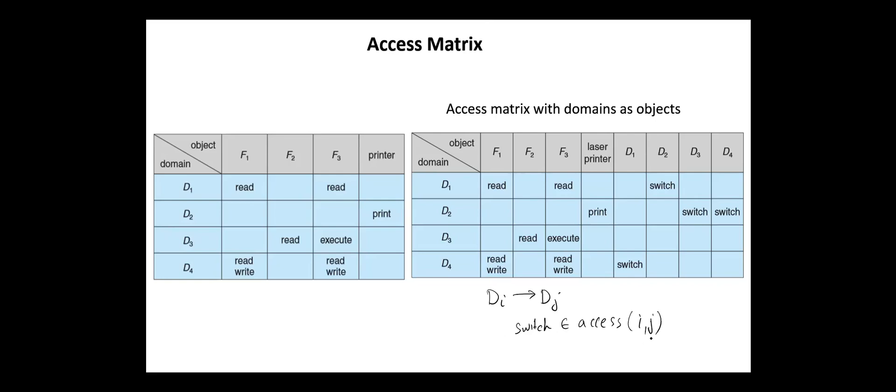For example, in this figure, domain 1 can switch only to domain 2. Domain 2 can switch to both domains D3 and D4. And domain D4 can switch only to domain D1.